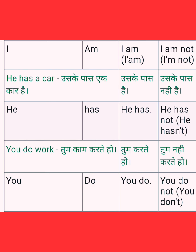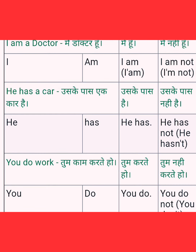He has a car — us ke paas car hai. The positive short answer is 'he has'. The negative is 'he hasn't' — us ke paas nahi. When someone possesses something, we use 'has'. So: he has a car. Short answer: yes, he has. Negative: no, he hasn't.